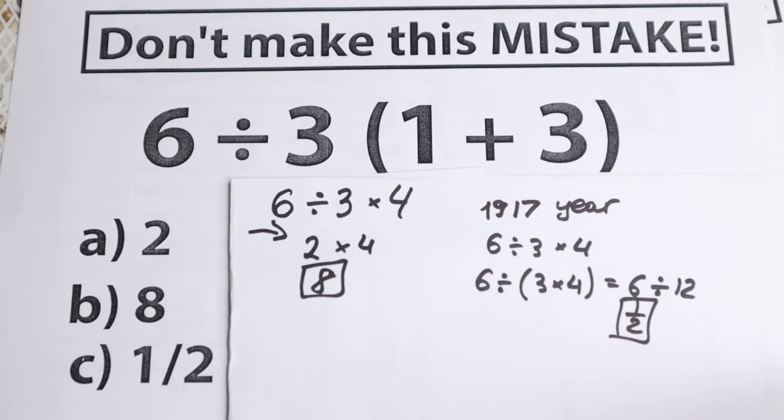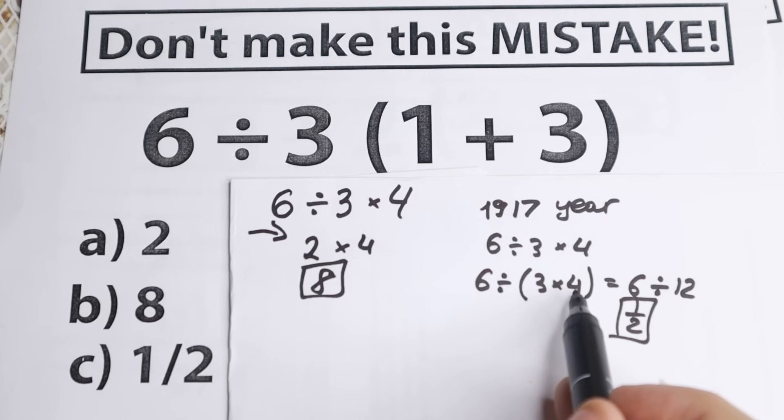From this stage, the rest of the calculation works by the order of operations: first evaluate the multiplication inside the parentheses, and then the division. This gives us the result of one-half.